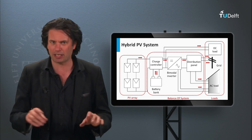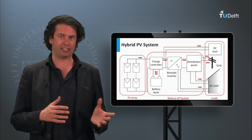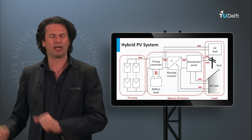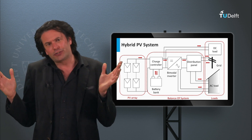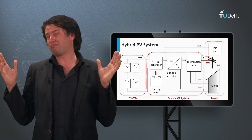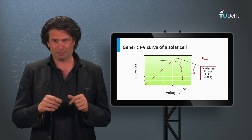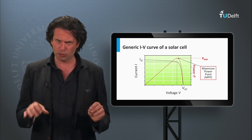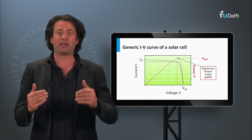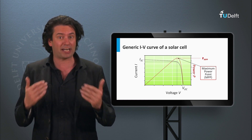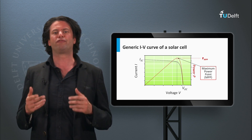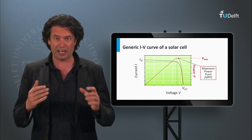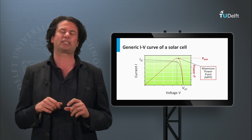Now we already know the basic application of an inverter in the PV system: power conversion from DC to AC. Can the inverter perform any additional function? The answer is yes. And thanks to the advancements in power electronics, it's common to have inverters that implement a maximum power point tracking mechanism before inverting the voltage, thus ensuring that the PV modules or arrays are operating at the maximum power point.